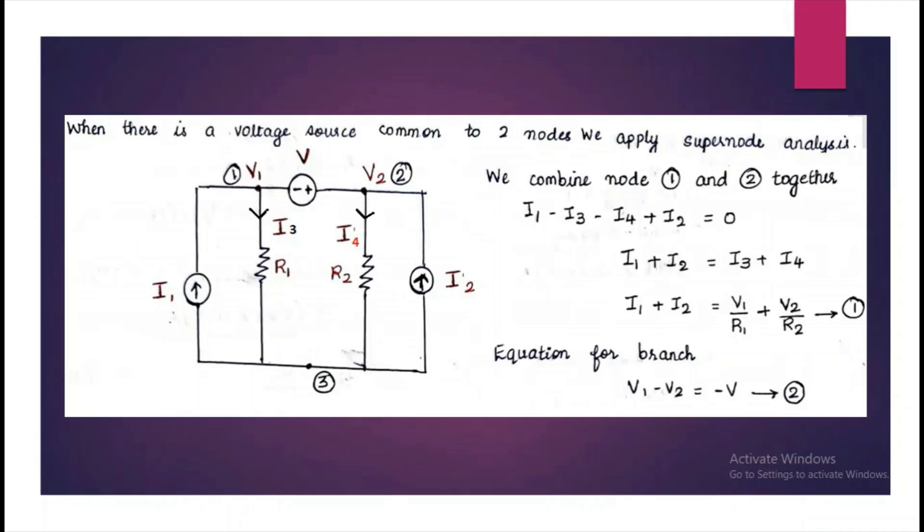To solve this type of problem, we have to mark the nodes first. Here we have three nodes, node 1, 2 and 3. Node 3 is ground node with voltage is equal to zero.